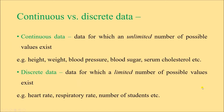The third classification is continuous versus discrete data. Continuous data are those for which an unlimited number of possible values exist — for example, height, weight, blood pressure, blood sugar, and serum cholesterol. Discrete data are those for which only a limited number of possible values exist — for example, heart rate, respiratory rate, and number of students.